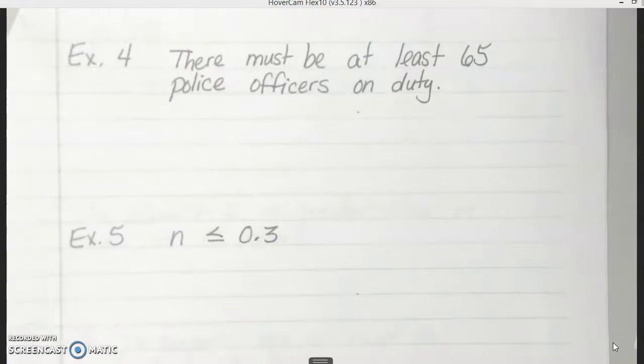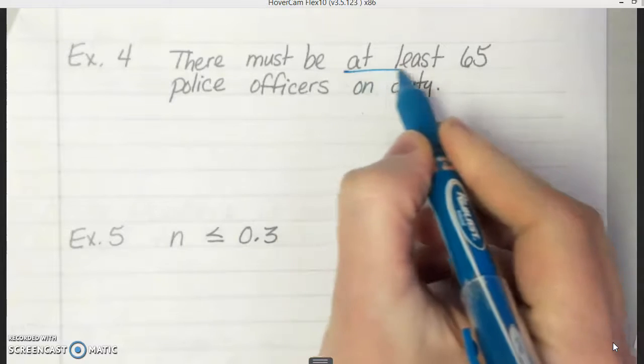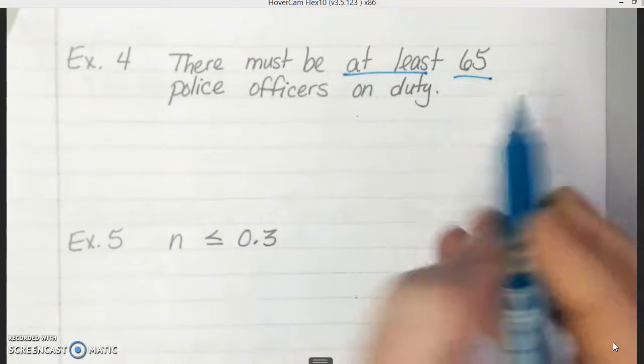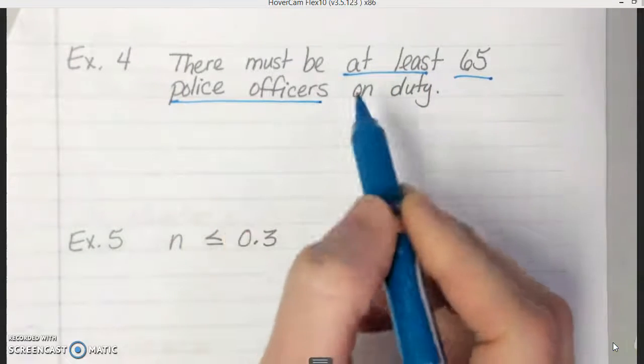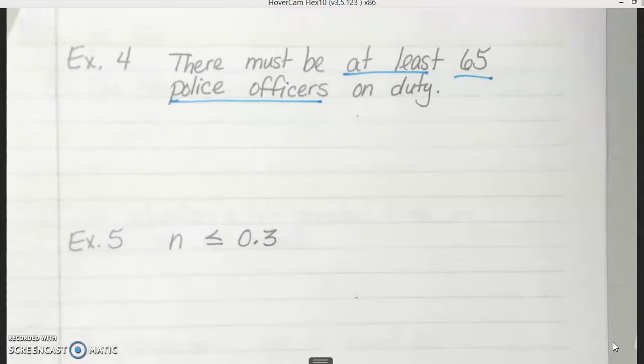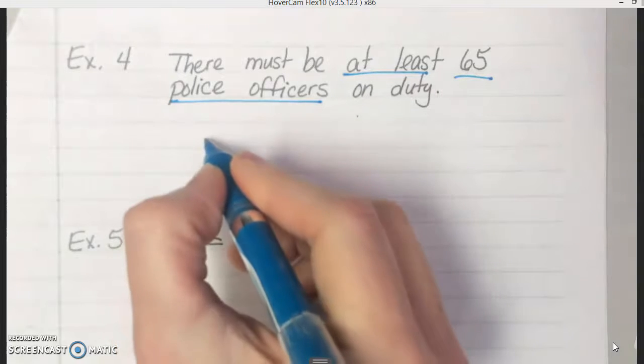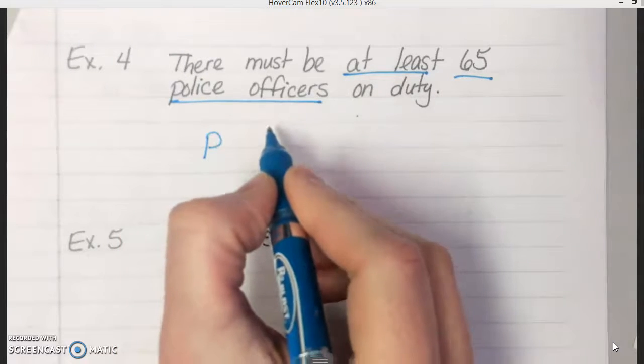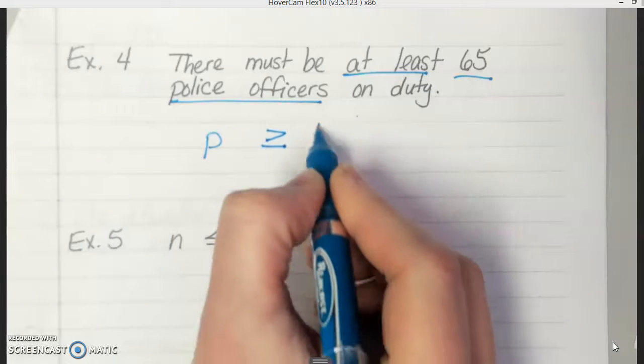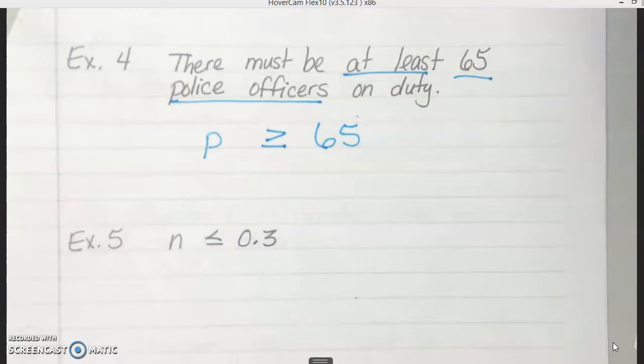Example four. There must be at least 65 police officers on duty. So we have the words at least 65 and police officers. So if it says there must be at least 65, how would we write that one? How many police officers would we have to have? We'd have to have greater than or equal to 65. Very good. Yes. At least means that it could be 65 or we have to have more.